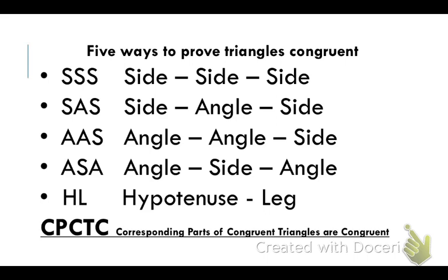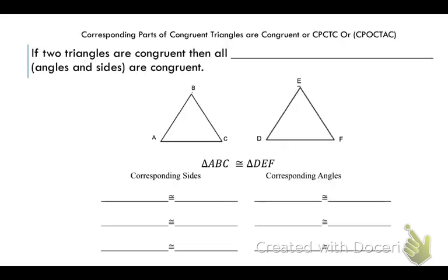We have now learned five different ways to prove that triangles are congruent — the last one requires right triangles. Now we're going to talk about CPCTC, which stands for 'corresponding parts of congruent triangles are congruent.' This theorem states: if two triangles are congruent, then all of their corresponding parts — their angles and their sides — are congruent.